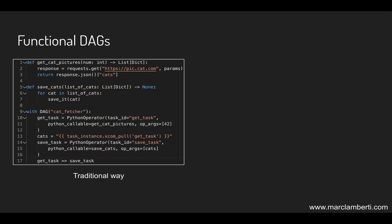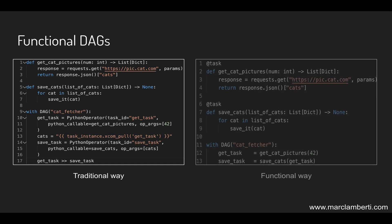The next update is related to the way of coding your DAGs. On the left is the traditional way of creating DAGs: you implement the tasks — here 'get_cat_pictures' and 'save_cats' — then instantiate Python operators with their task IDs, Python callable functions, parameters, and so on. Finally you define the dependencies at the bottom of the DAG. This is a lot of code.